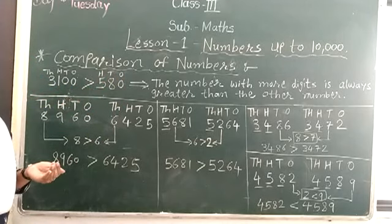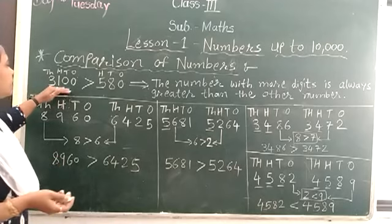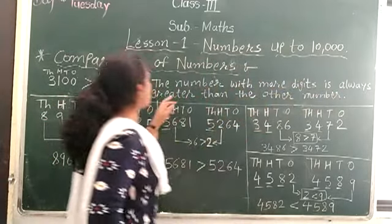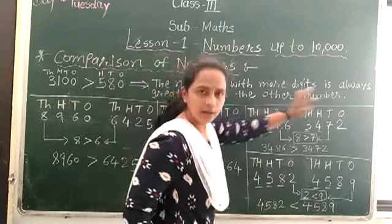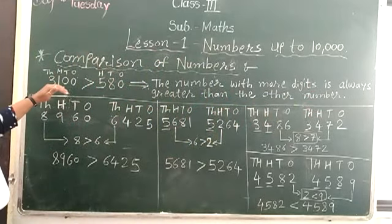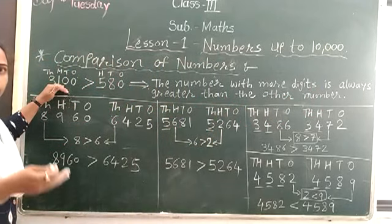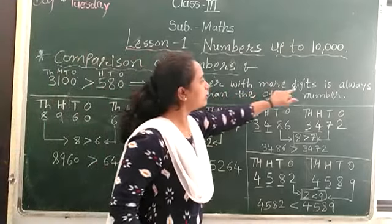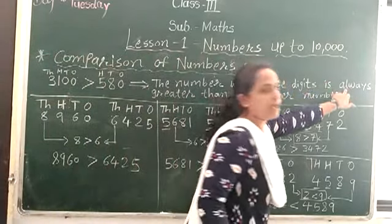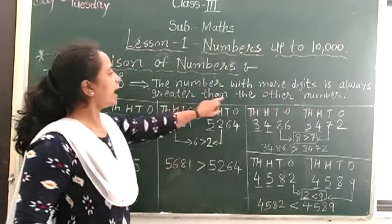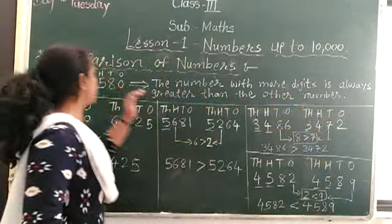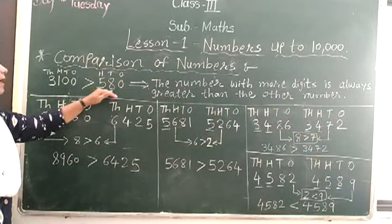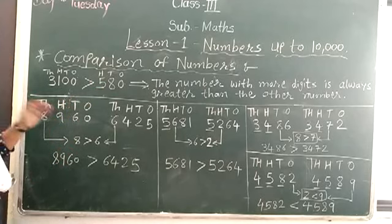How to compare these two numbers? In this case, the number with more digits is always greater than the other number. If you have more digits, that is the greater number. So here 3,100 is greater than 518.